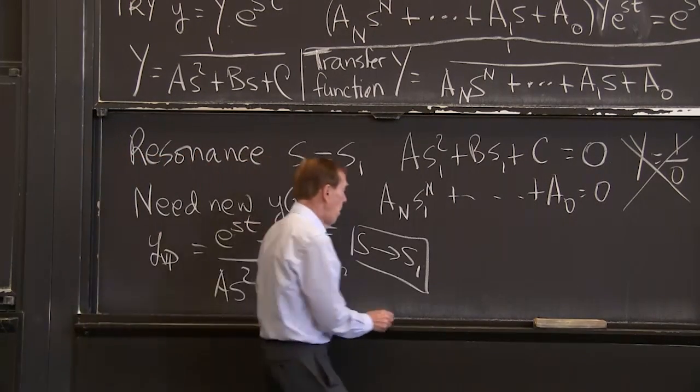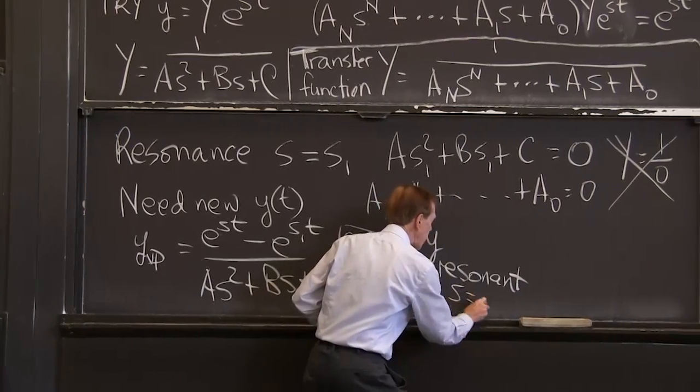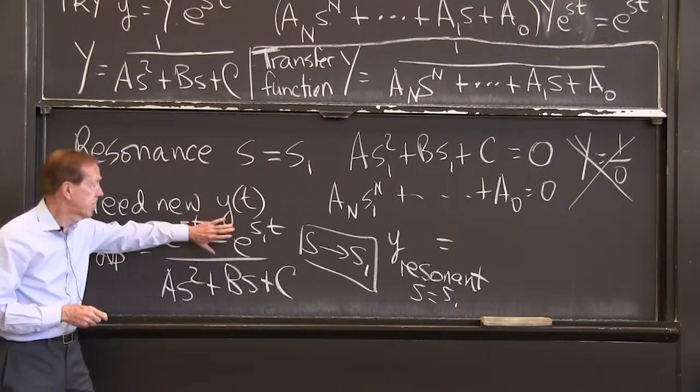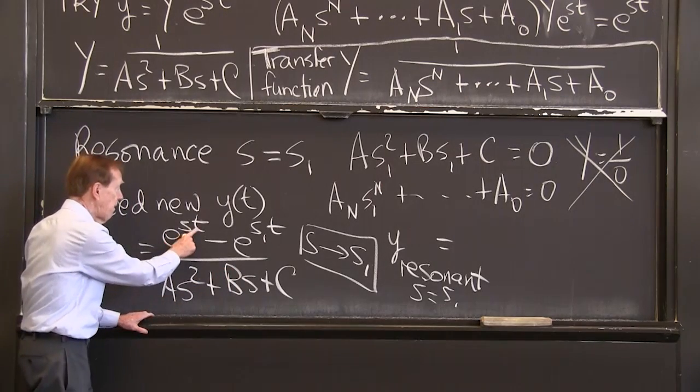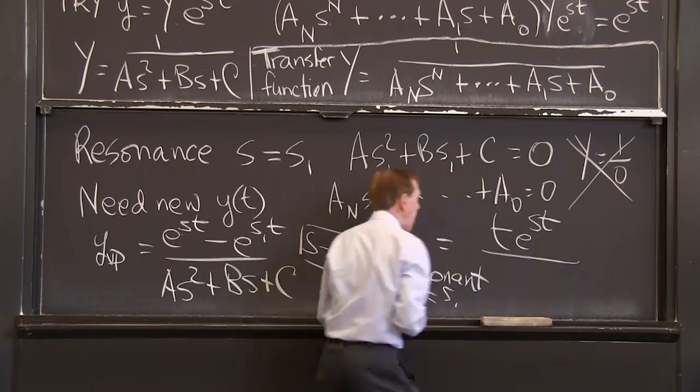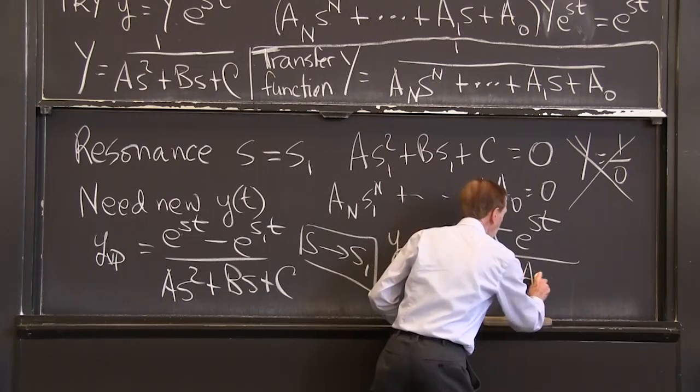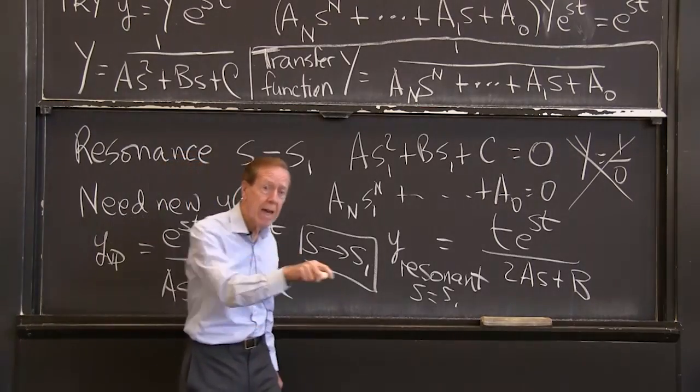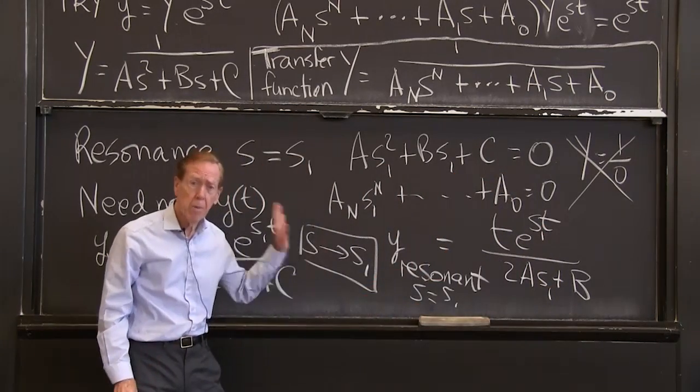You see, we're sneaking up on resonance. Resonance, when s equals s1, that will be 0 and that will be 0. That's our problem. So approach it and you end up with the derivative of this divided by the derivative of this. Do you remember L'Hopital? It was a crazy rule in calculus, but here it's actually needed. So as s goes to s1, this goes to 0 over 0. So I have to take derivative over derivative.